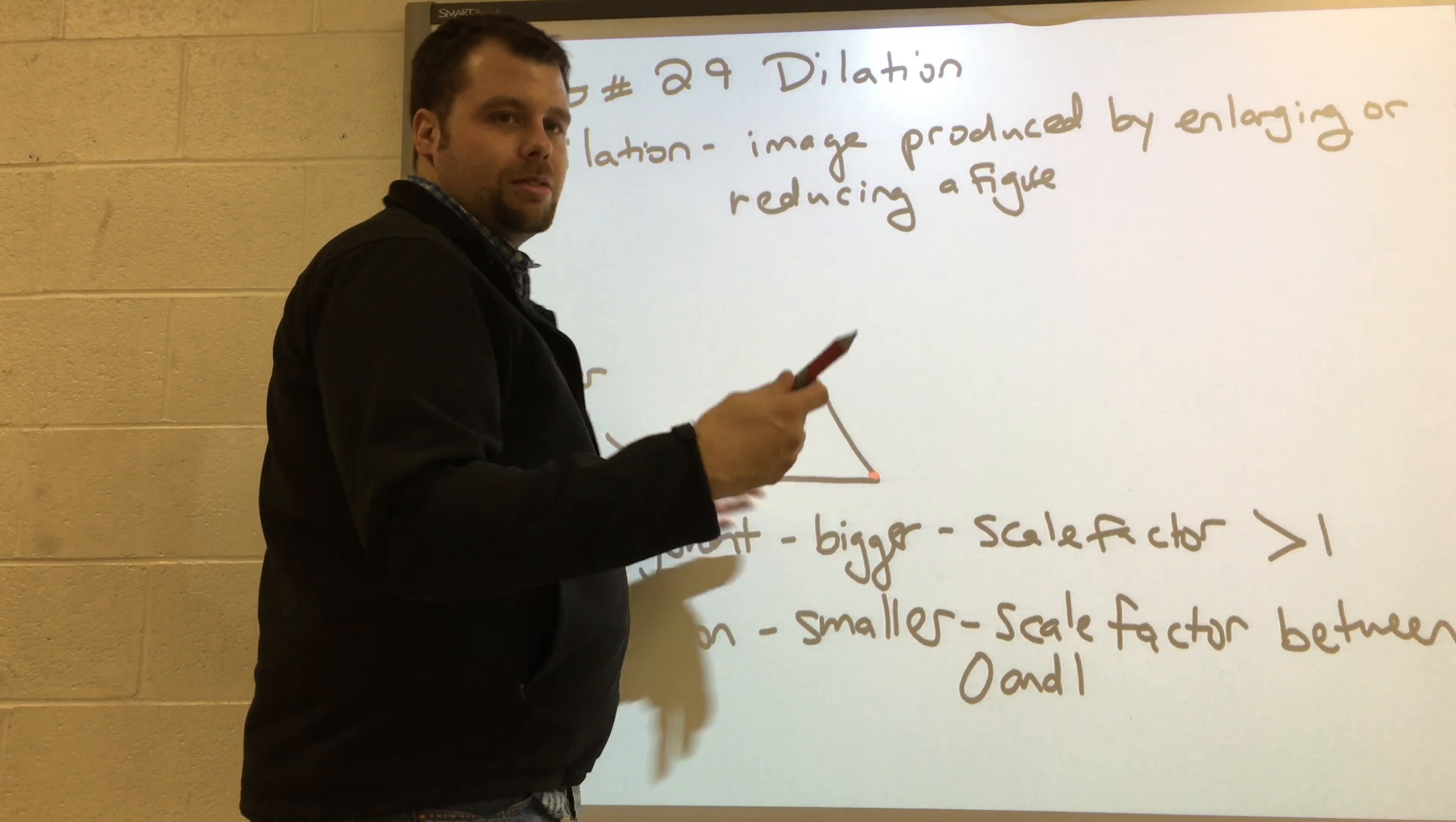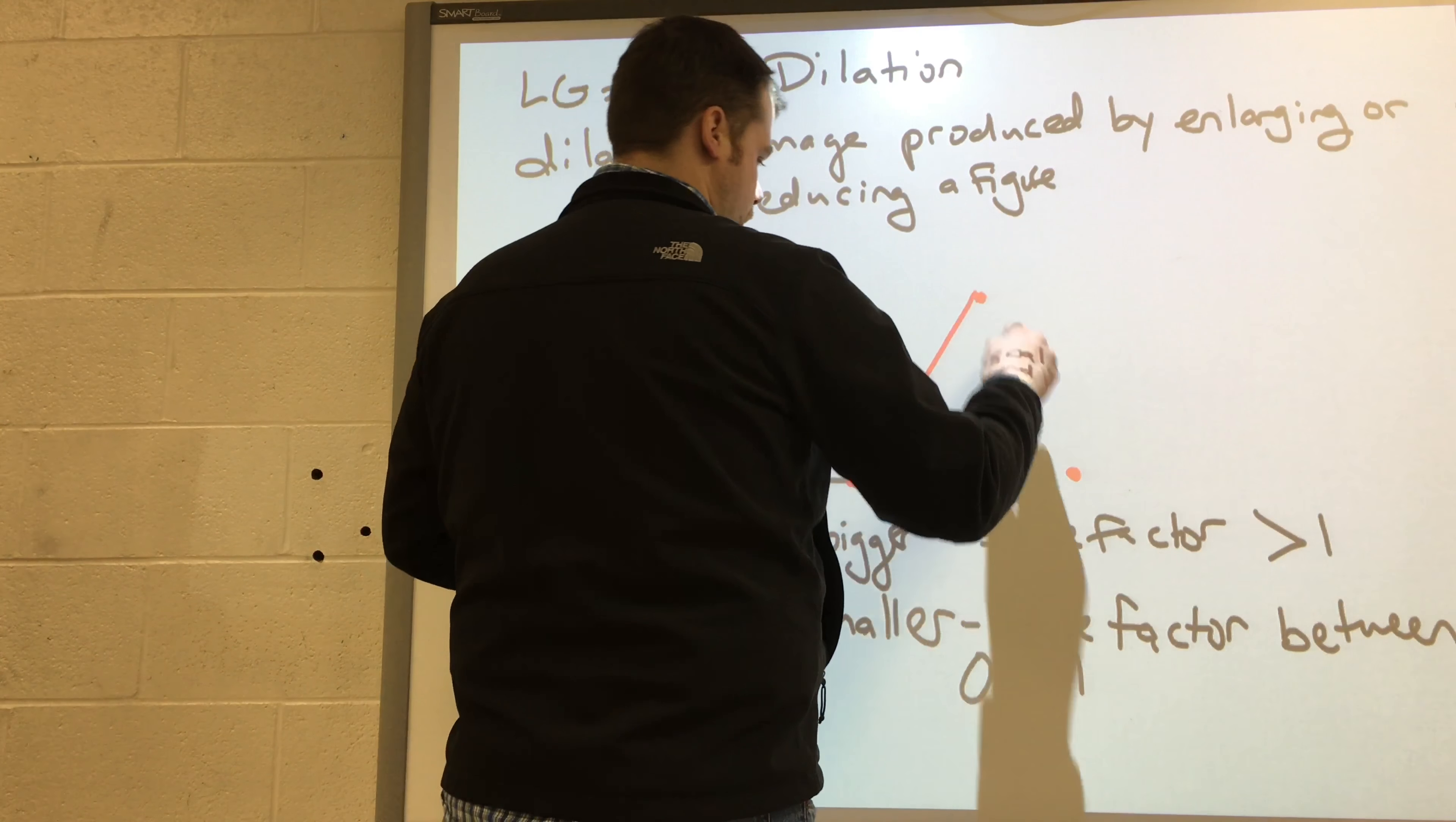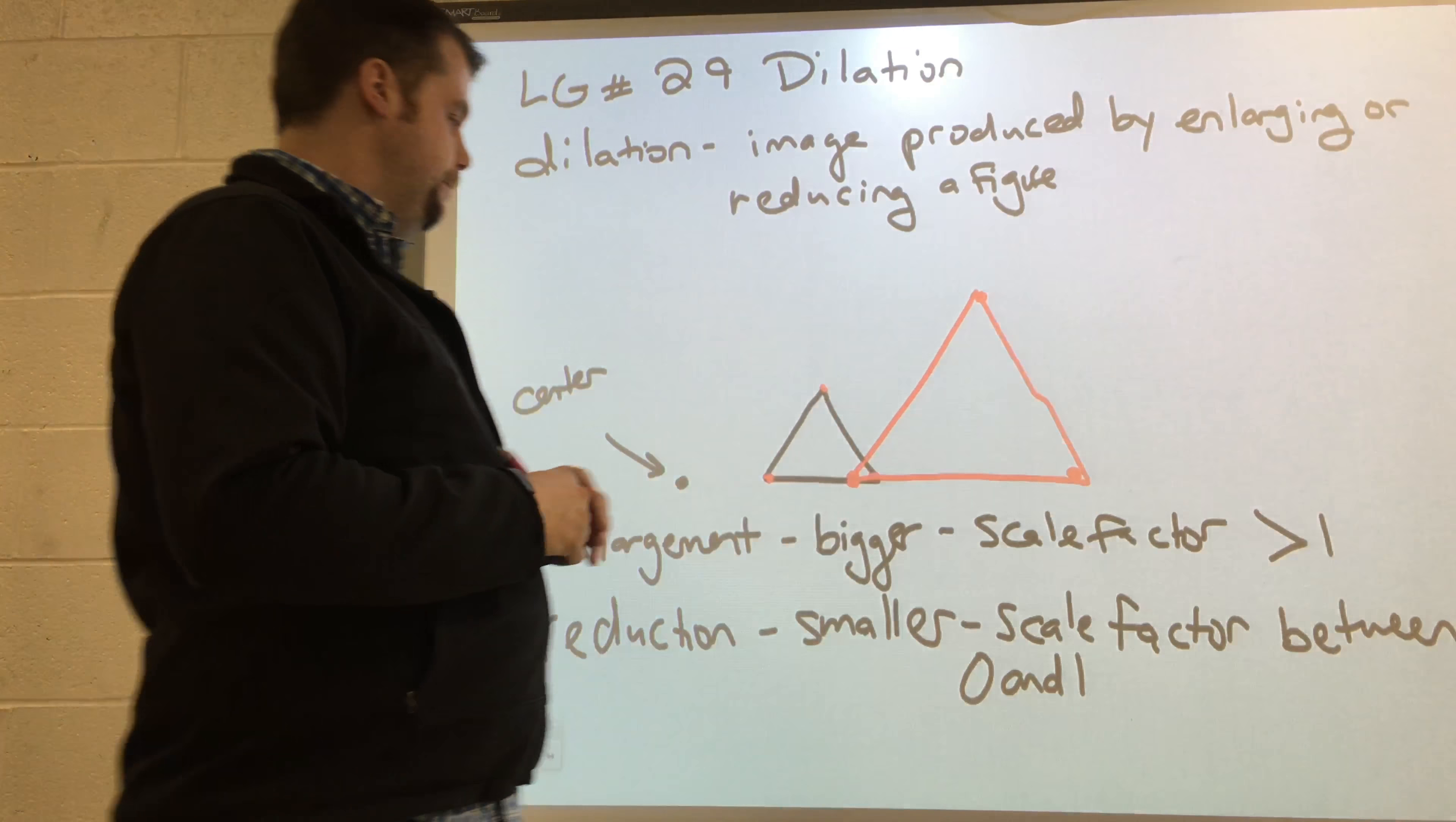So if I wanted to draw something that was twice the size of it, I measure this distance and then I go out that far again and do that for all the points. Obviously I'm just eyeing it up here and theoretically speaking that triangle would be double, and it would have a scale factor of two in relation to this one. It's twice the size of it.